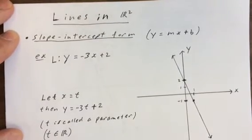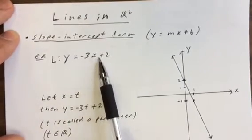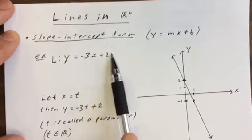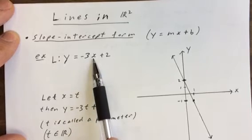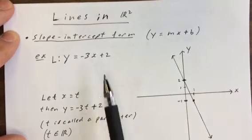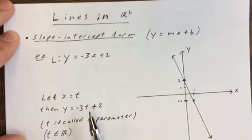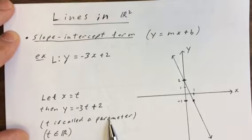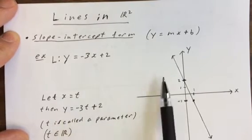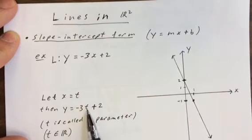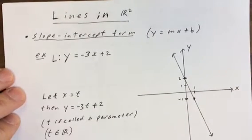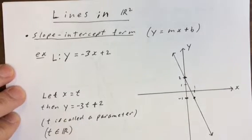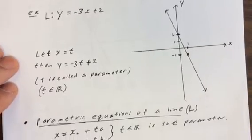Here's where we start to over-complicate things a little. If you let x equal any number, you sub that in for x and evaluate for y. So let's let x equal t. Substituting in, we get y equals negative 3t plus 2 — instead of x, we get a t. t is called a parameter. Now we have an equation for both the x-coordinate and the y-coordinate of any point on this line in terms of the variable t, where t is any real number.